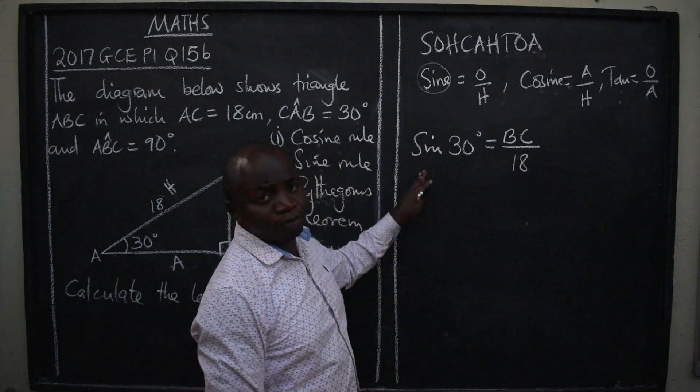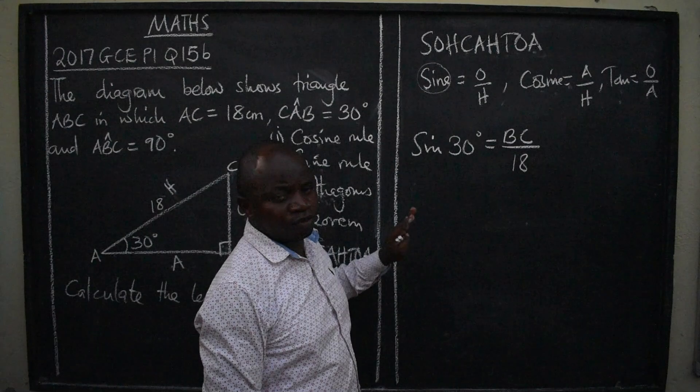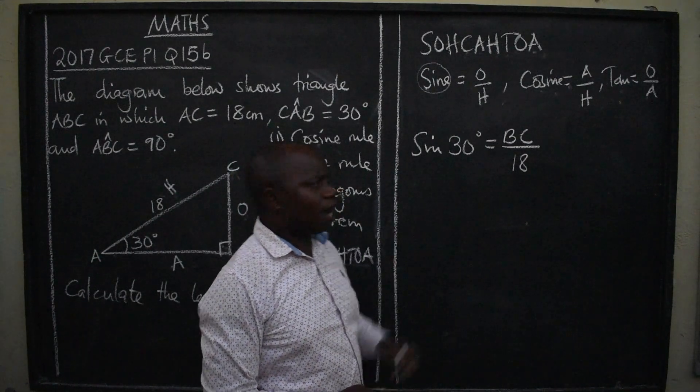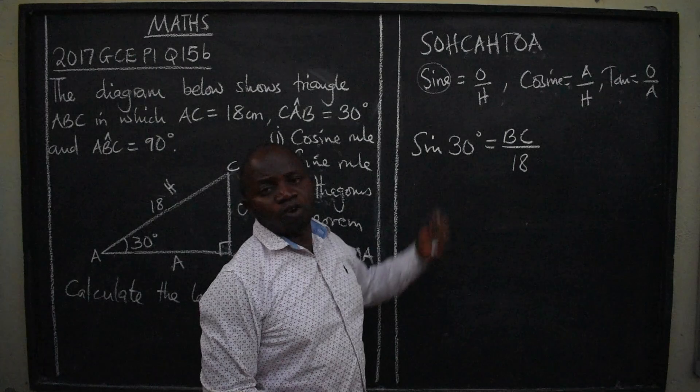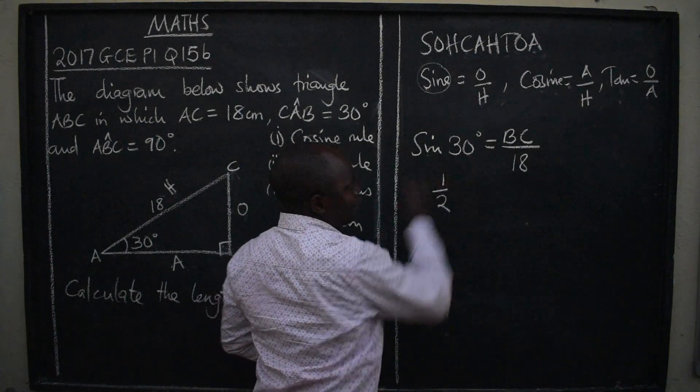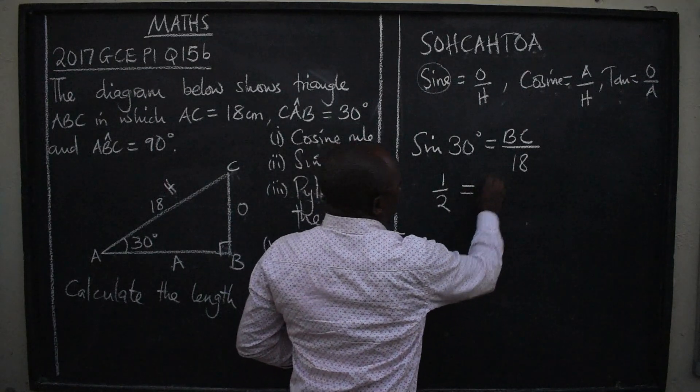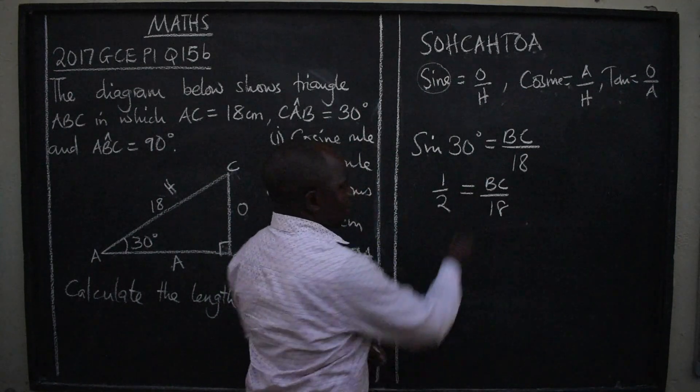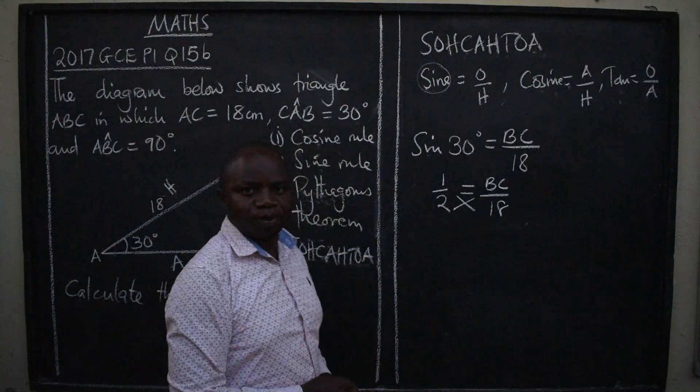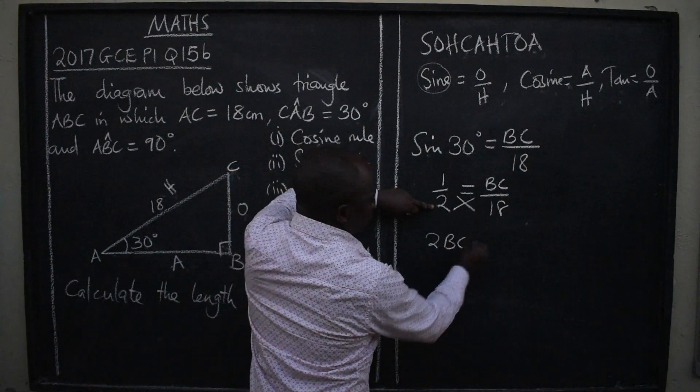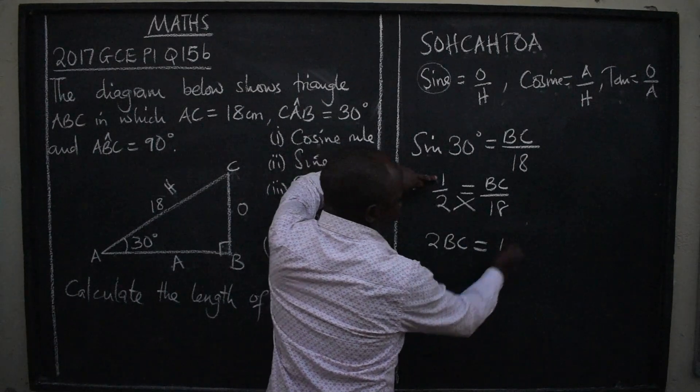Next, this is paper 1. No use of calculator. What is sine 30? Special angles, remember? Special angles. So, sine 30 is 0.5 or 1 over 2. So, you can say 1 over 2 here. That is sine 30. It's equal to BC over 18. To get BC, we will be able to cross-multiply. 2 times BC, which will be 2BC is equal to 1 times 18. 18.